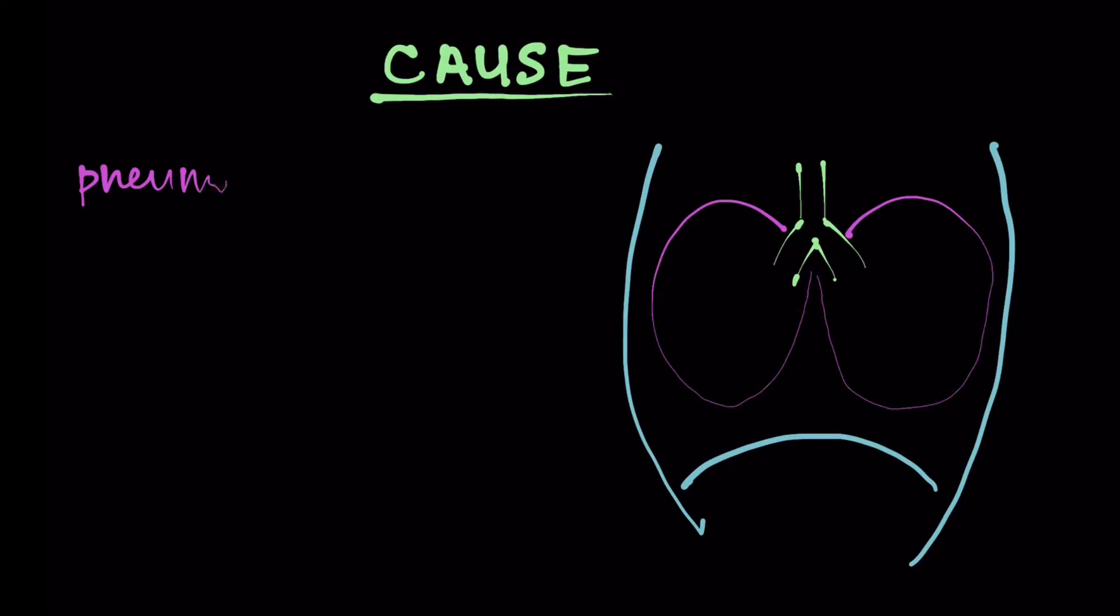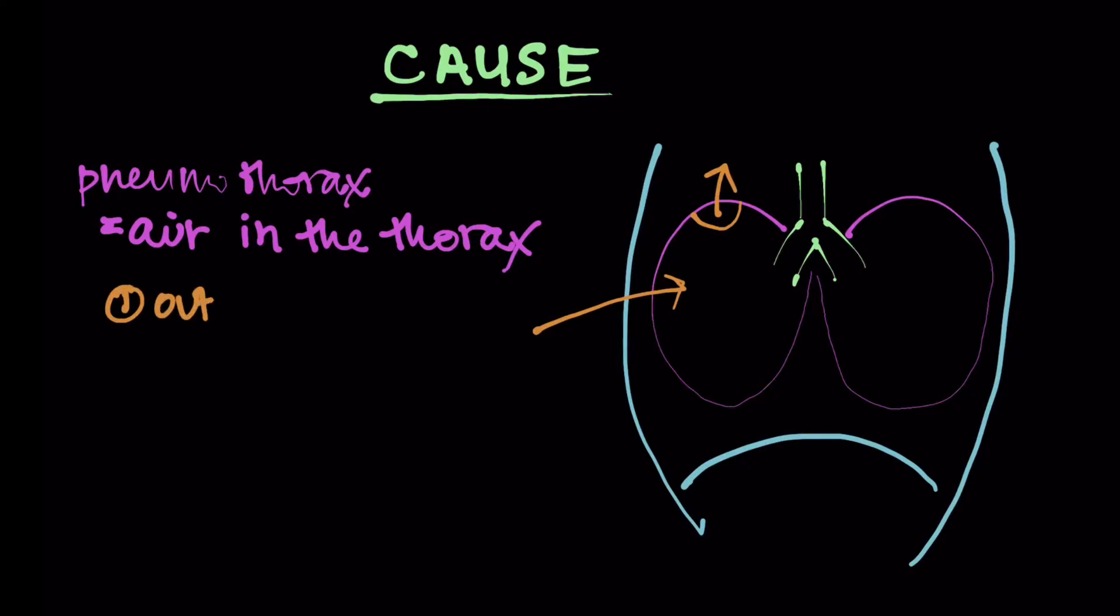Alright, so cause. Pneumothorax literally means air in the thorax, air in the chest. So you have this potential space between your visceral pleura and your parietal pleura. And so something's got to make a hole, right? So pop a hole such that that space fills up with air.